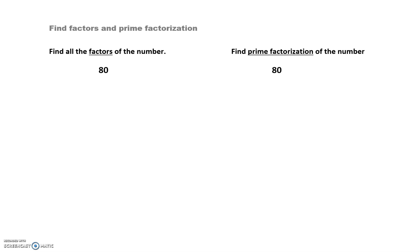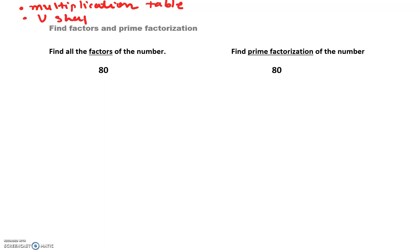We're going to find all the factors of 80 and find the prime factorization of 80. What is the major difference between factors and prime factorization? For factors, we use a multiplication table and a U-shape. For prime factorization, we use prime numbers and a tree shape, like branches coming out of 80.